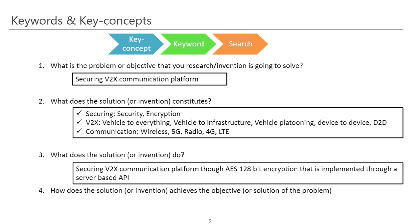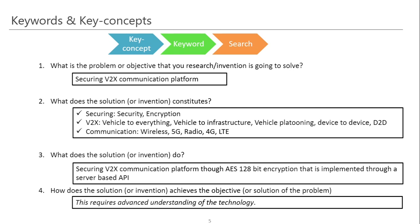After getting the answer to the third question, you can build an effective search strategy. The fourth question requires a more advanced understanding of the technology. Many researchers and inventors are still in a work-in-progress phase. If you have the answer to the fourth question — how does the solution achieve the objective — you can build a more precise and focused search strategy. Otherwise, the first three questions are sufficient to begin building your strategy.